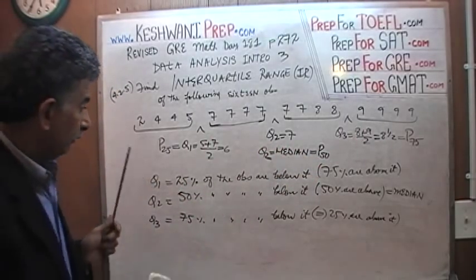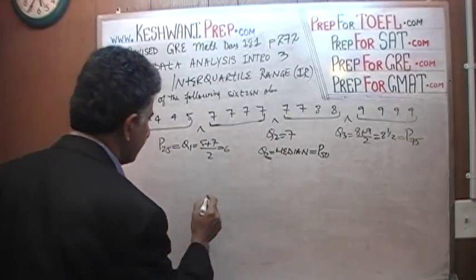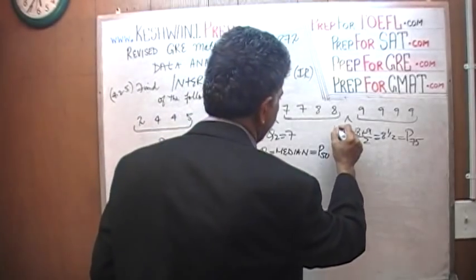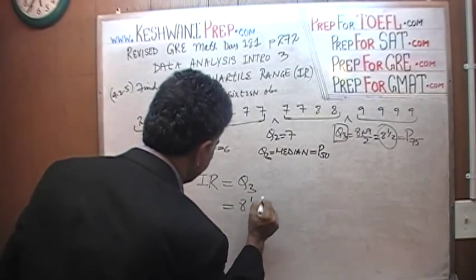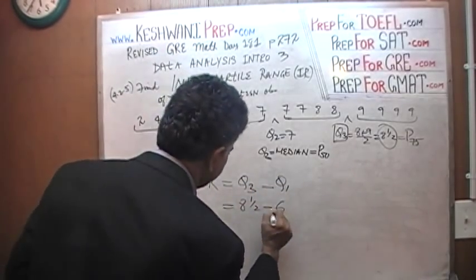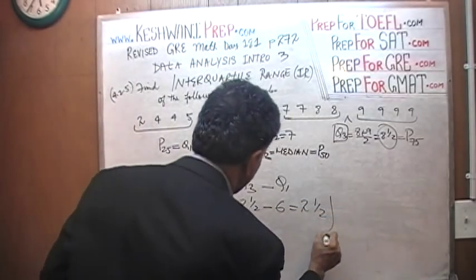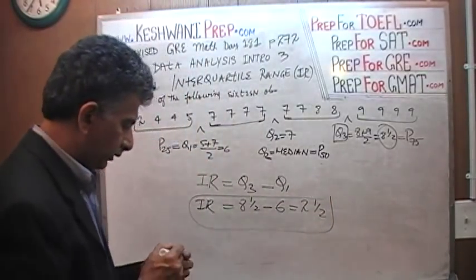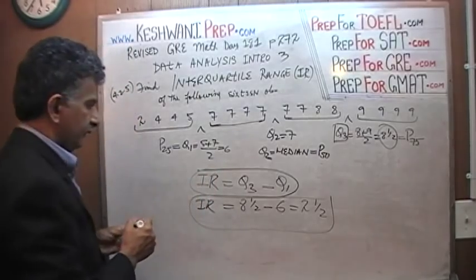Now let's find the interquartile range. The interquartile range is the third quartile minus the first quartile: 8.5 minus 6 equals 2.5. So the interquartile range equals 2.5.